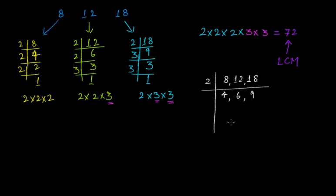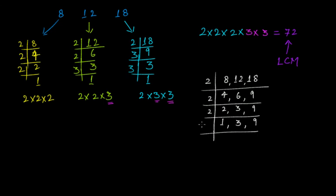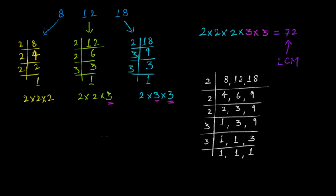Divide by 2: 8 gives 4, 12 gives 6, 18 gives 9. Divide by 2 again: 4 gives 2, 6 gives 3, and 9 is not divisible by 2 so write it as is. Divide by 2 again: 2 gives 1, 3 is not divisible by 2 so write as is, and 9 stays. Now divide by 3: 1 stays as is, 3 divided by 3 gives 1, and 9 divided by 3 gives 3.